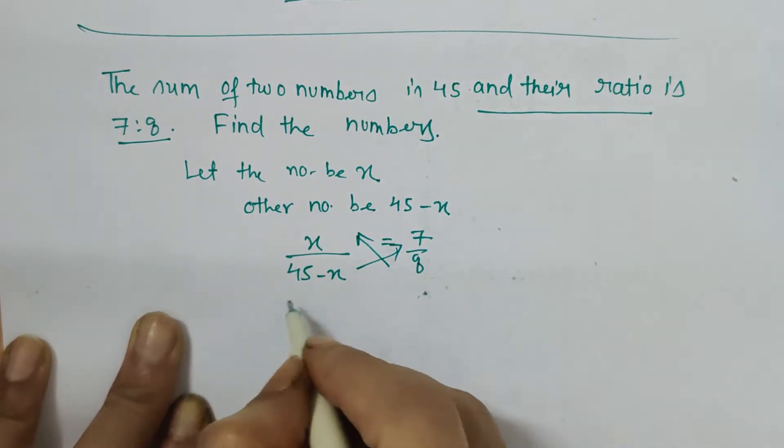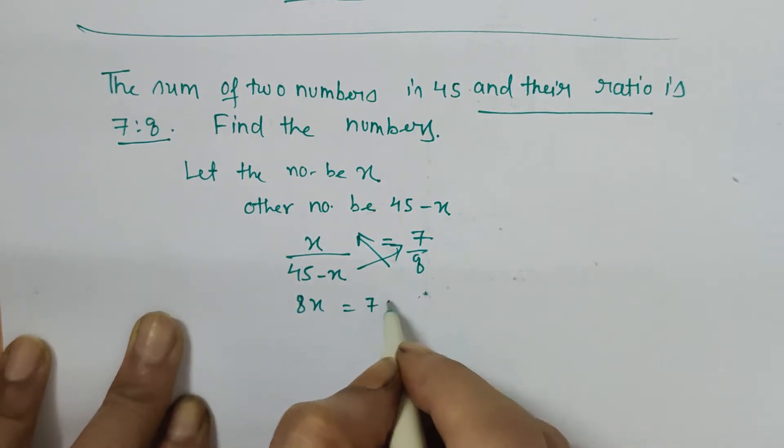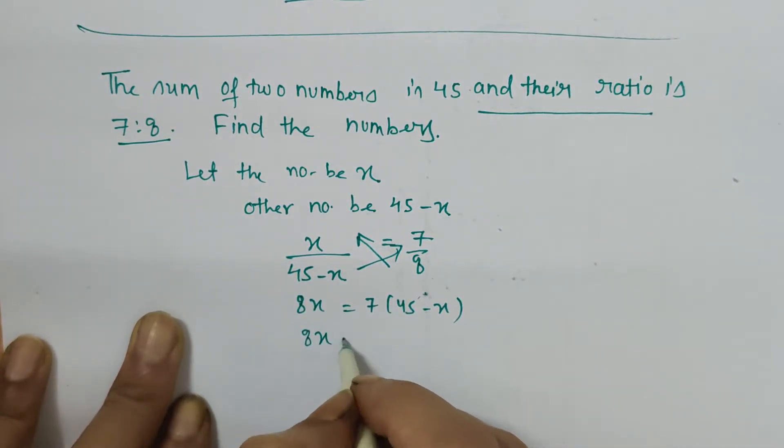So what we will do is cross multiply, which gives 8x is equal to 7 times 45 minus x. 8x is equal to 315 minus 7x.